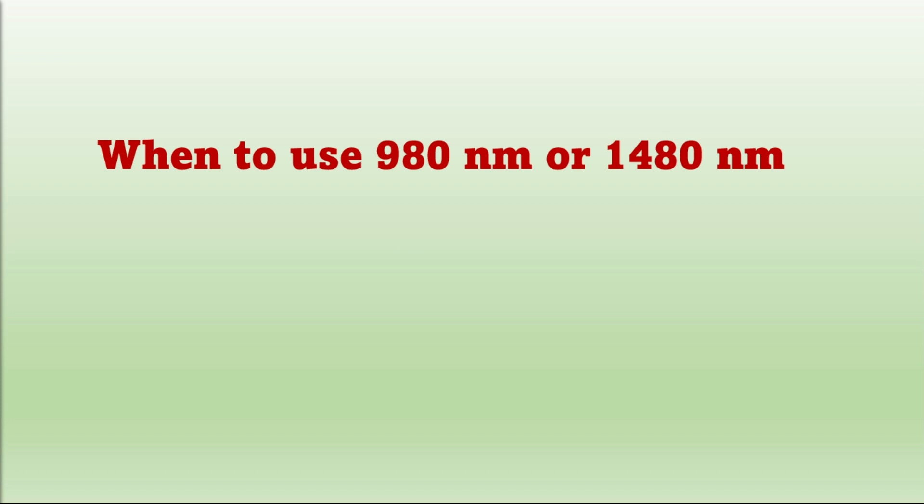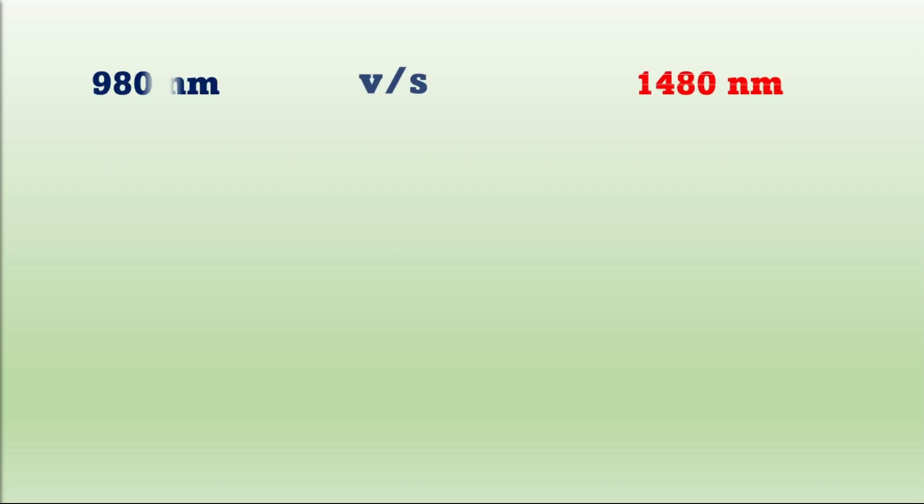The major differences between using these wavelengths are: with 980 nanometers will get low gain around 10 to 15 dB. With 1480 nanometers will get high gain around 20 to 30 dB.